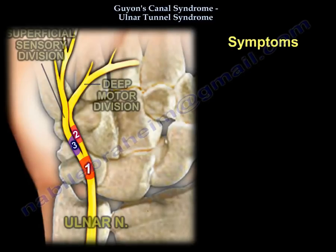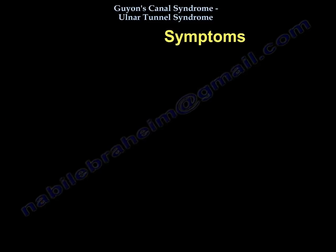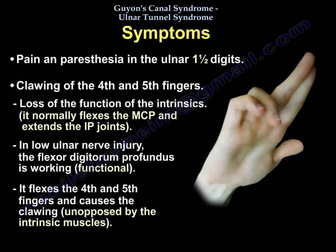What are the symptoms? Based on the location of the compression in Guyon's Canal, the affected area of the nerve may be purely motor, purely sensory, or a mixture of motor and sensory. The patient may have pain and paresthesia in the ulnar one and a half digits, clawing of the fourth and fifth fingers, and loss of function of the intrinsics.